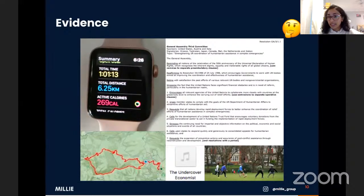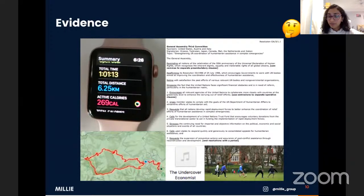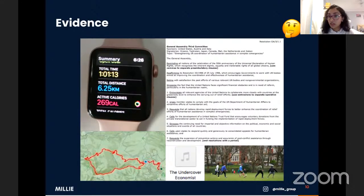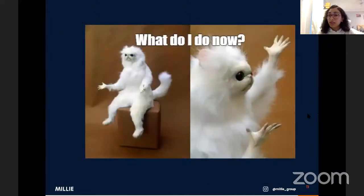Evidence is by far one of the easiest parts of the CAS program. All you need to do is show that you've done the activity. This can be a picture of you doing the activity, a screenshot of your Apple Watch or Fitbit showing how far you've run, a screenshot of an app mapping your route, an audio recording of a meeting, or a piece of work you've created. Anything that proves you've done what you're saying you've done counts as evidence.